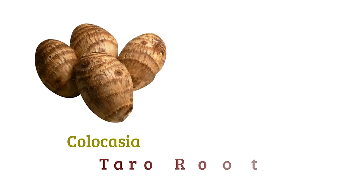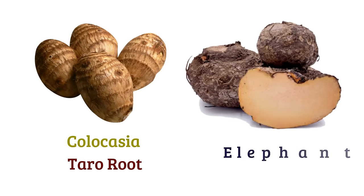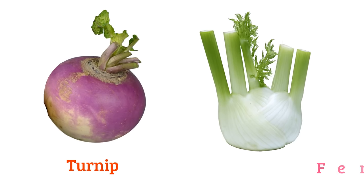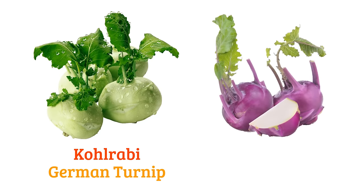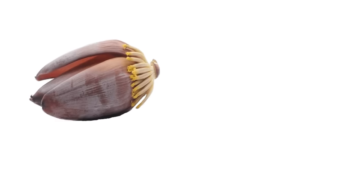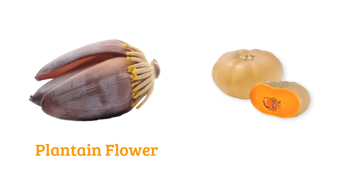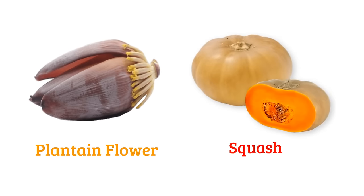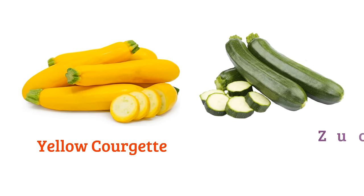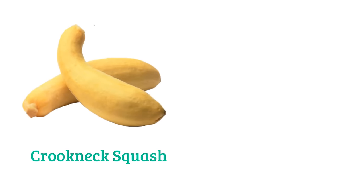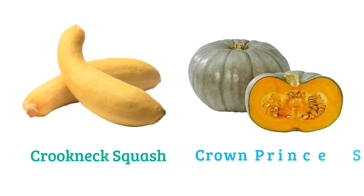Colocasia or taro root, elephant foot yam, turnip. Kohlrabi or German turnip, purple kohlrabi, plantain flower, yellow courgette, zucchini or green courgette, crookneck squash, crown prince squash.